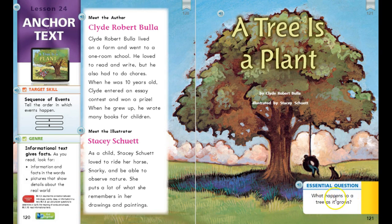Let's look at our essential question on the bottom of page 121: what happens to a tree as it grows? We're going to keep that question in mind as we preview, predict, and read. Please pause the video so you can preview the selection — it starts on page 121 and ends on page 147. Look for the labels and pictures in the informational text, then predict what you think the story will be about. Good readers also set a purpose for reading, so pause the video now and do those three things.